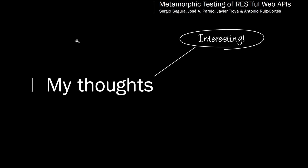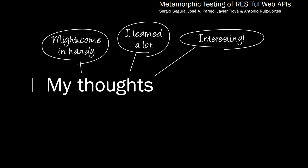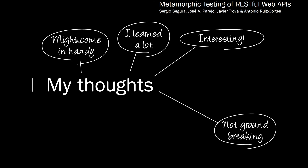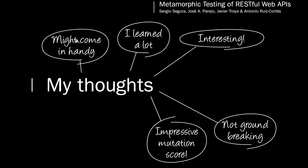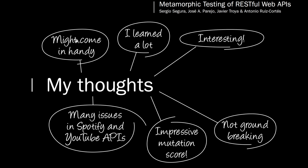The article was interesting. It presented metamorphic testing and an approach that can come in handy in the future. It's not groundbreaking — the authors do not claim this approach will detect all faults in a RESTful web API, or that the six proposed patterns are a complete set. The high mutation score is a remarkable result, considering that metamorphic testing only alleviates the oracle problem — it doesn't remove it completely.